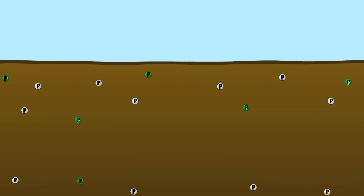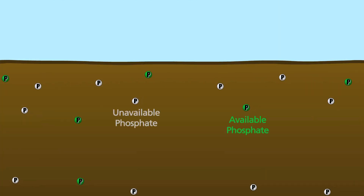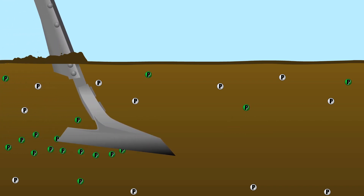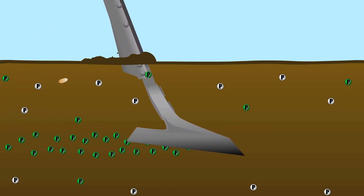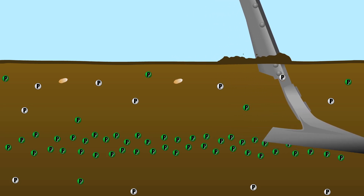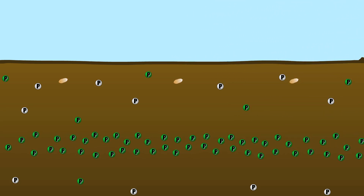Prior to seeding, soil phosphate is present in both unavailable and available forms. At seeding, phosphate fertilizer is placed in a band. Most of the phosphate fertilizer is available at time of application.